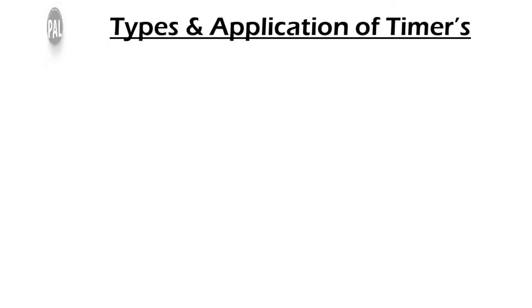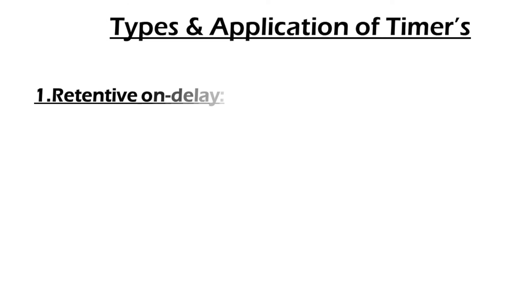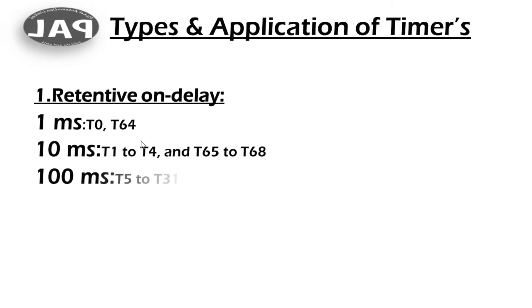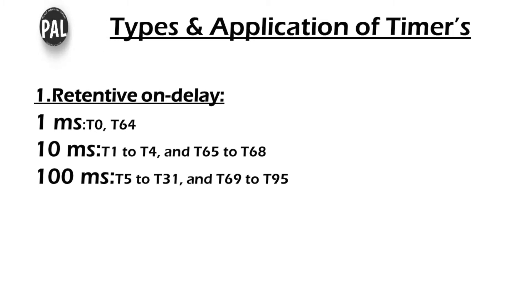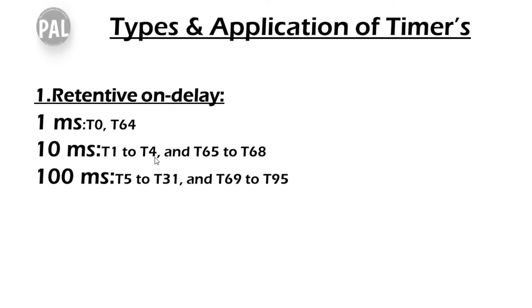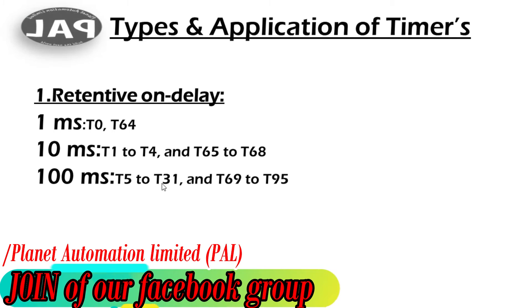Now the very important topic: types and applications of timers. The first type is the retentive on-delay timer (TONR). Resolution breakdown: 1 millisecond timers are T0 and T64 — only two timers. 10 millisecond timers are T1 to T4 and T65 to T68 — that gives 4 plus 5 equals 9 timers. 100 millisecond timers are T5 to T31, a large number, plus T69 to T95 — all for 100 millisecond.